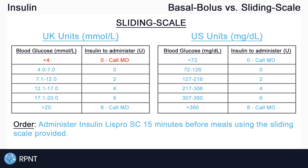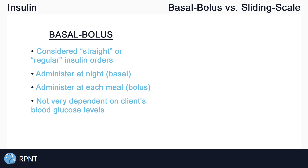The goal of the sliding scale is always to monitor and maintain blood glucose levels by adjusting the amount of insulin being administered. To review: a basal bolus insulin order is insulin that is to be administered at night time (basal) and at each meal (bolus). Basal bolus insulin orders are not very dependent on the client's blood glucose level, as long as they are within baseline for that client.